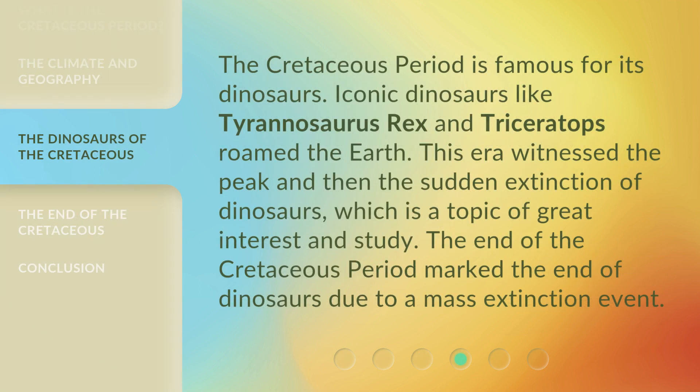The Cretaceous period is famous for its dinosaurs. Iconic dinosaurs like Tyrannosaurus rex and Triceratops roamed the Earth. This era witnessed the peak and then the sudden extinction of dinosaurs, which is a topic of great interest and study. The end of the Cretaceous period marked the end of dinosaurs due to a mass extinction event.